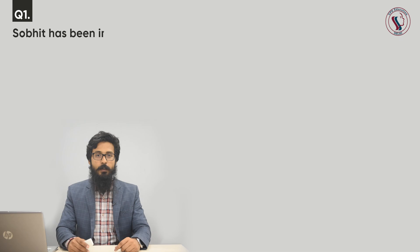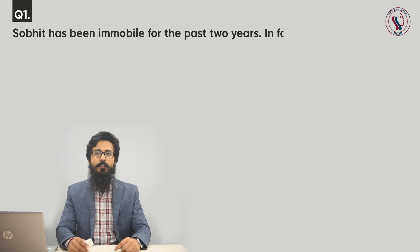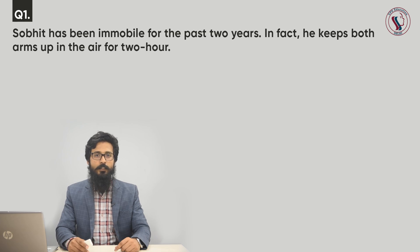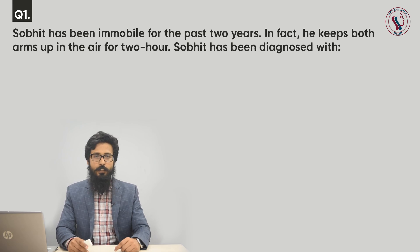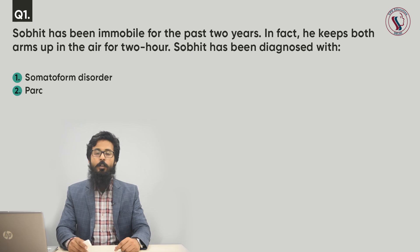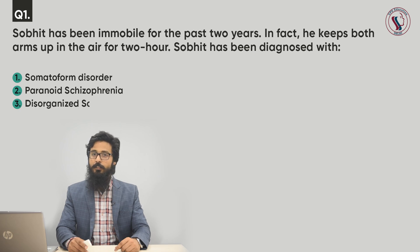Question number one. Sobhid has been immobile for the past two years. He keeps both arms up in the air for two hours. Sobhid has been diagnosed with: option one, somatoform disorder; option two, paranoid schizophrenia; option three, disorganized schizophrenia; and option four, catatonic schizophrenia.